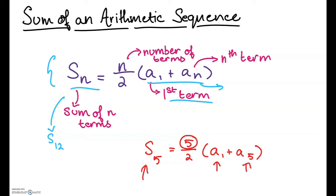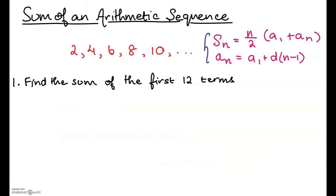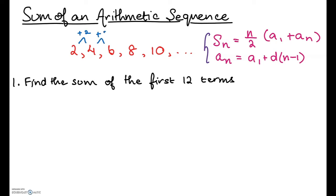Now let's work on a couple of examples. We are given the sequence 2, 4, 6, 8, 10, and it continues. This is an arithmetic sequence because we're adding 2 to get from one term to the next. If you want a refresher on arithmetic sequences, I'll link an introductory video below. We are asked to find the sum of the first 12 terms.